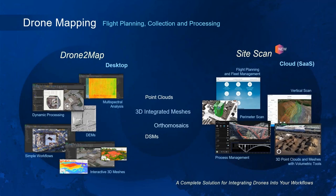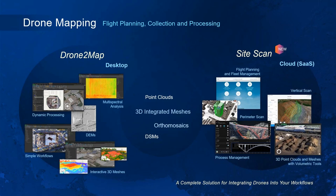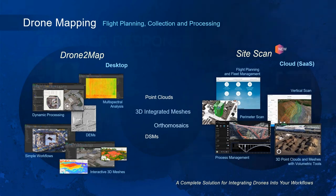More and more, we're seeing the use of UAS and drone deployments to support USAR and other public safety operations, and we have applications to support that. Our Drone2Map is a desktop-based application that supports processing imagery and 3D data you can then integrate into your GIS, and SiteScan is a cloud-based program that allows not only imagery processing but flight planning and fleet management.